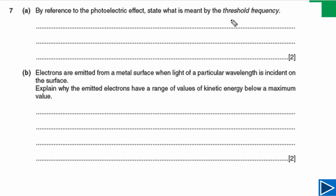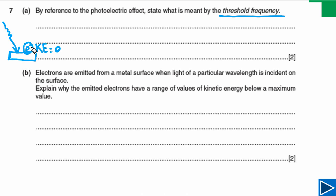Part A is simply asking us to explain what threshold frequency is. Threshold frequency means that if we have a piece of metal and we shine light on it, and an electron is emitted from the surface with no kinetic energy, the frequency of that electromagnetic radiation is called the threshold frequency. This is the minimum frequency of electromagnetic radiation needed for emission of electrons from a metal.